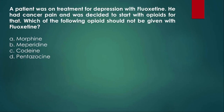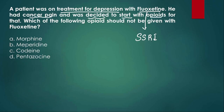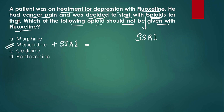The fourth MCQ: a patient on treatment for depression with fluoxetine — an SSRI — has cancer pain and a decision is made to start opiates. Which opiate should not be given with fluoxetine? The answer is meperidine. If you give meperidine with an SSRI, there is a risk of increased serotonin levels, which can lead to serotonin syndrome.